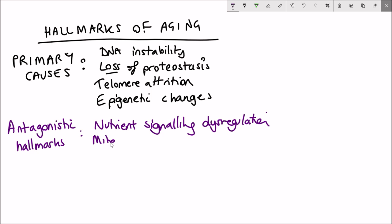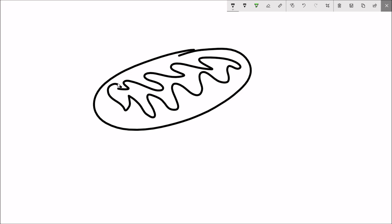Next up is mitochondrial dysfunction. Mitochondria are essential for aerobic respiration which enables energy production in the cell. However, over time this process becomes less efficient.